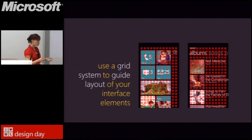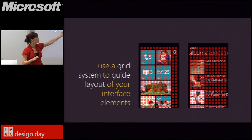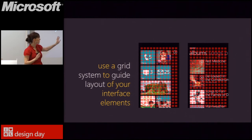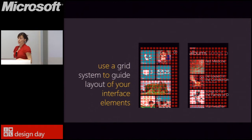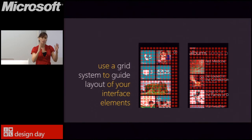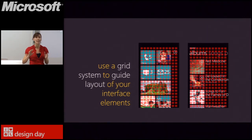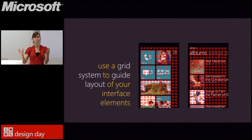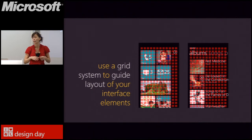Best practice two: use a grid system to guide layout of your interface elements. In our native Windows Phone applications, we've used a specific grid to guide layout, and we've made it available for you to leverage. The principle of clear, light, open, and fast really applies to use of this grid. Organizing and grouping information nicely makes interfaces more aesthetically pleasing. Use of this grid can also help you take advantage of negative space — that empty space — which draws the user's eye to the most important information on screen.